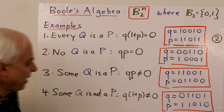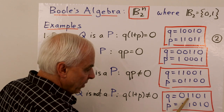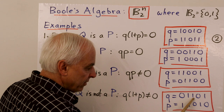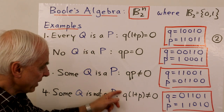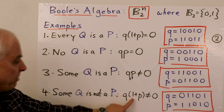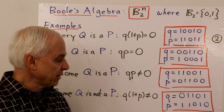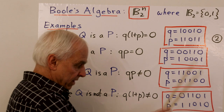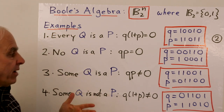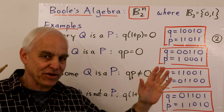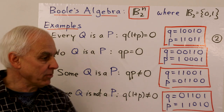Finally, some Q is not a P — that's Q·(1 + P) ≠ 0. If Q is on in the third and fifth positions but P is not on there, then taking Q·(1 + P) gives ones in the third and fifth positions, so it's not the zero vector. I hope this illustrates how simple and free from philosophical considerations this is. This is purely mathematics — really just the arithmetic of zeros and ones. All philosophy has been put aside and we're just doing basic algebra.